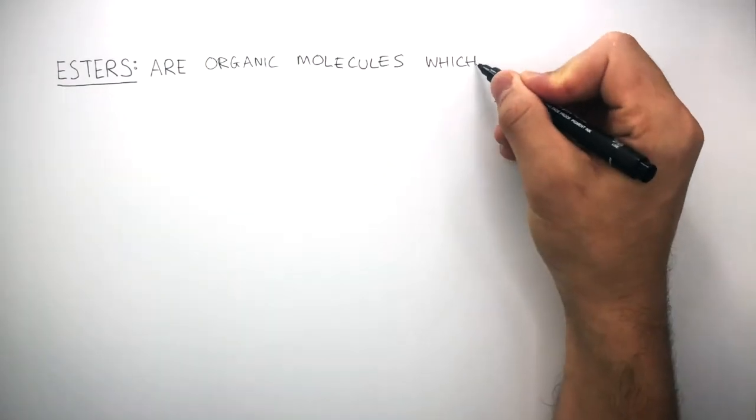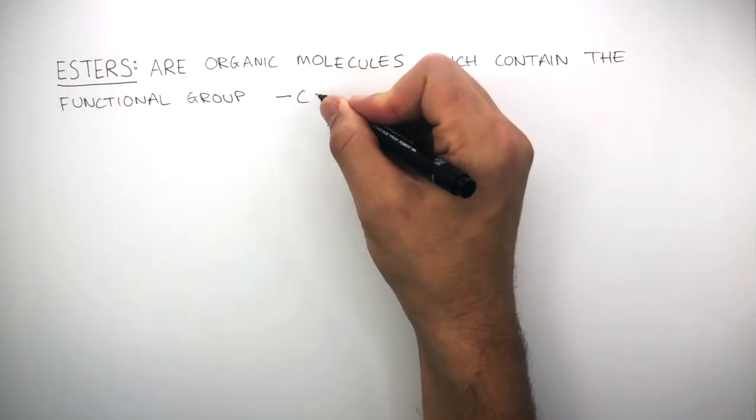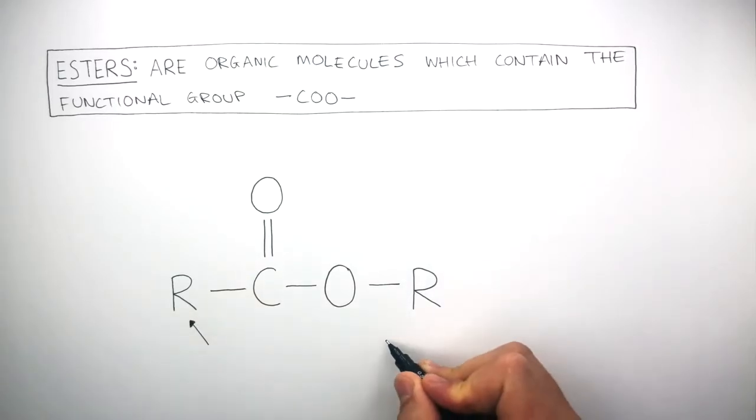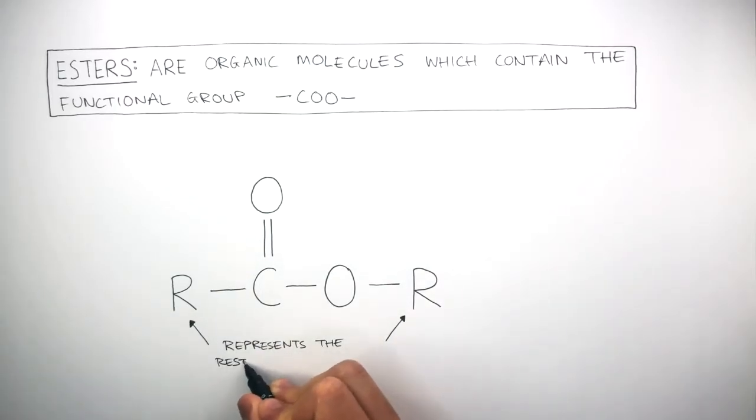Esters are organic molecules which contain the functional group COO and can be found in the middle of a molecule. This diagram represents the displayed formula of an ester and the two R's represent the rest of the molecule.